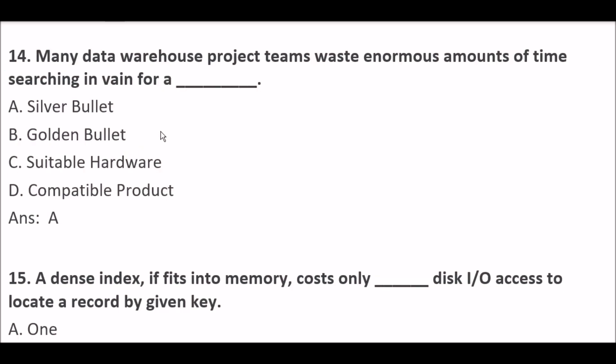Many data warehouse project teams spend enormous amounts of time searching in vain for a blank space. Option A: Silver bullet. Option B: Golden bullet. Option C: Suitable hardware. Option D: Compatible product. Right answer is Option A — Silver bullet. Many data warehouse project teams spend enormous amounts of time searching in vain for a silver bullet.